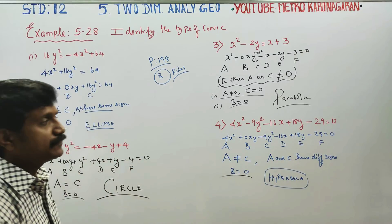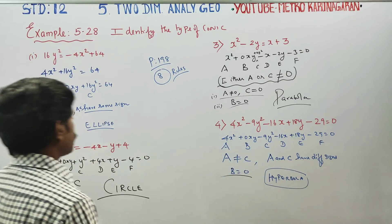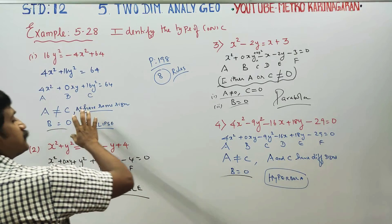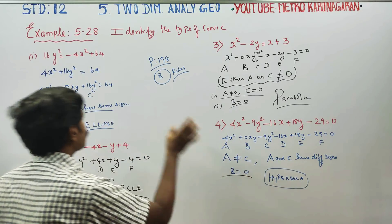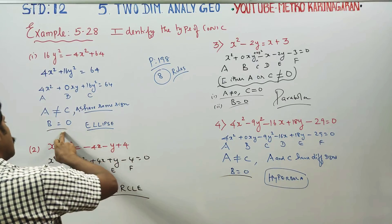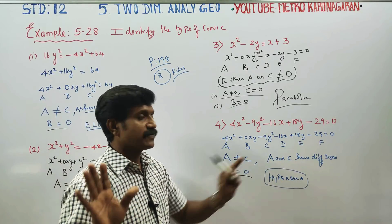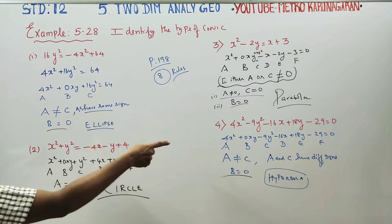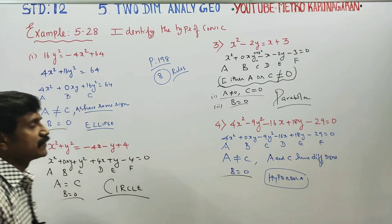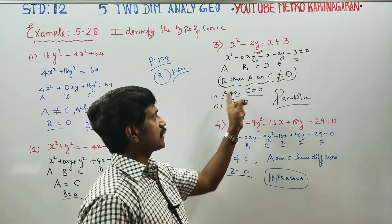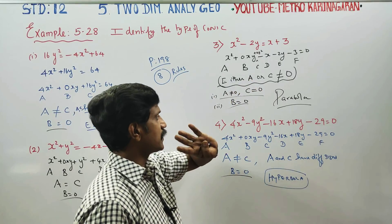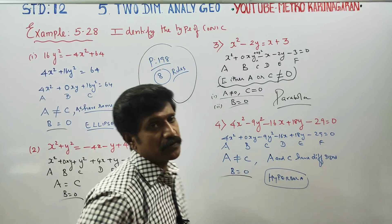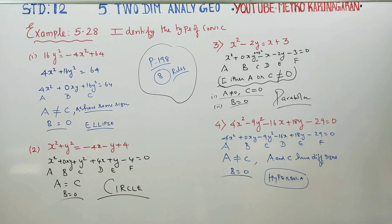If you know these four types, you can identify any conic. The conics are: circle, parabola, ellipse, and hyperbola. The rules are — circle: a equal to c and b equal to 0; parabola: either a or c equal to 0 and b equal to 0; ellipse: same sign; hyperbola: different sign. You can refer to page 198 for the full rules. Thank you.